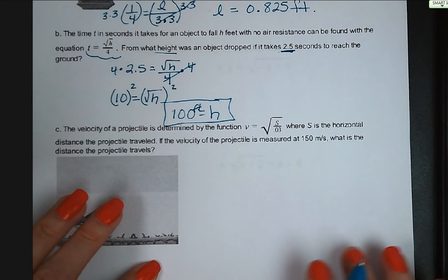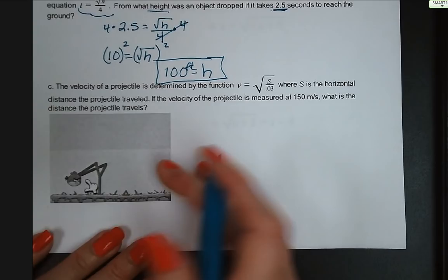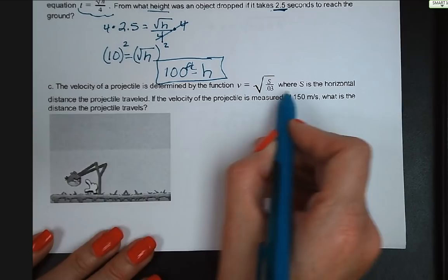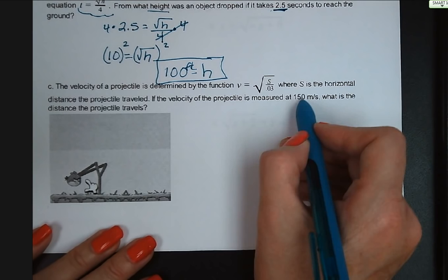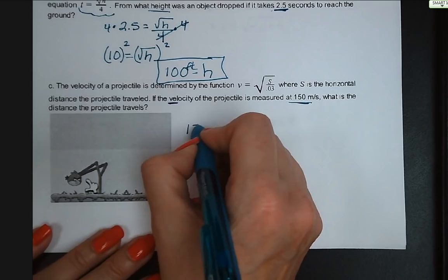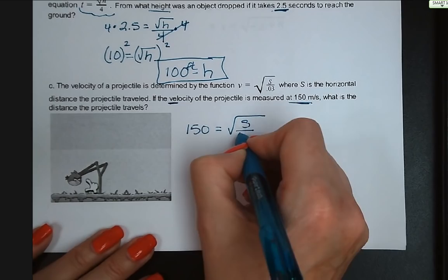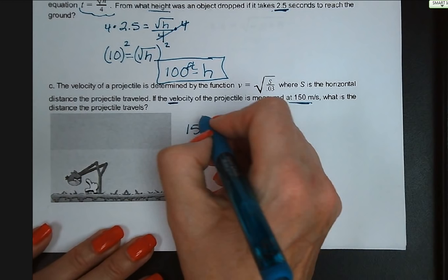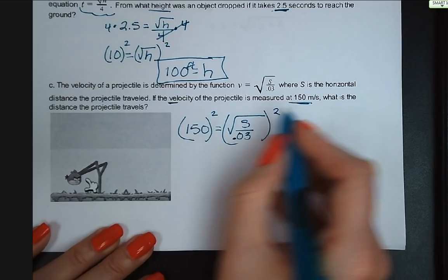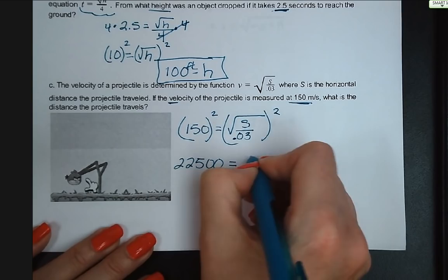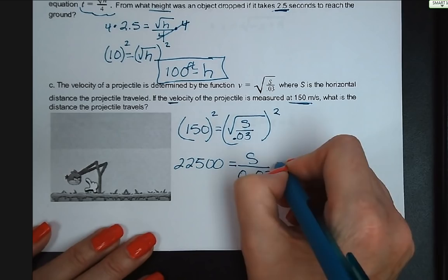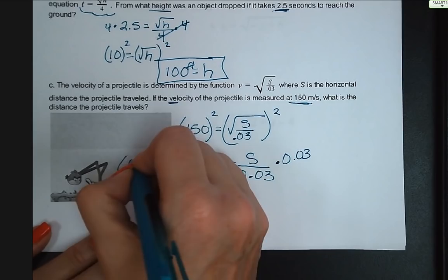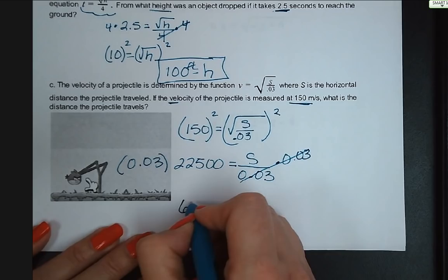Make sure to write your units. Letter c: the velocity of a projectile is v equals the square root of s over 0.03, where s is the horizontal distance traveled. If velocity is 150 meters per second, substitute 150: 150 equals the square root of s over 0.03. Square both sides: 22,500 equals s over 0.03. Multiply both sides by 0.03 and s equals 675 meters.